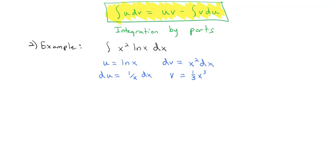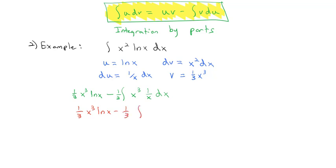Using our integration by parts formula, our integral of u dv — the original problem — is equal to u times v, which is natural log of x times one third x cubed, minus the integral of v du. V has a one third, which I'll pull out front since it's just a constant, leaving x cubed times du, which is 1 over x dx. The hope is that using this formula we'll get something easier to integrate, and sure enough we do, because x cubed divided by x leaves behind an x squared dx.